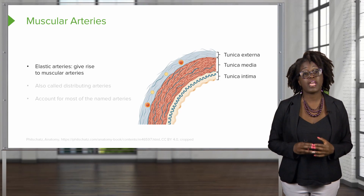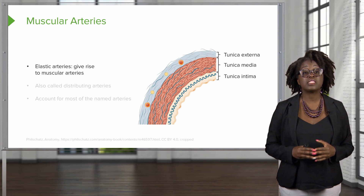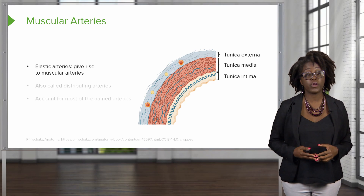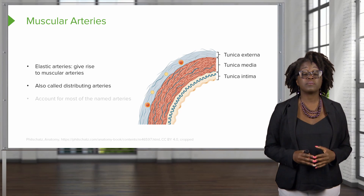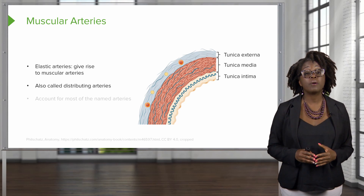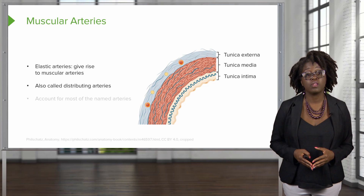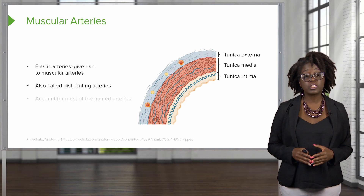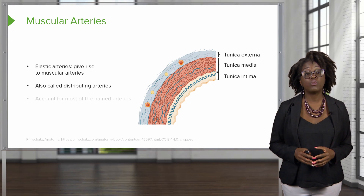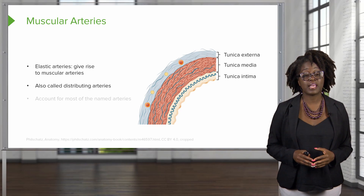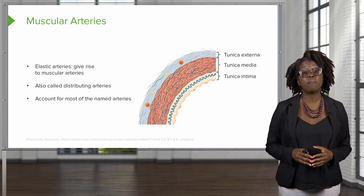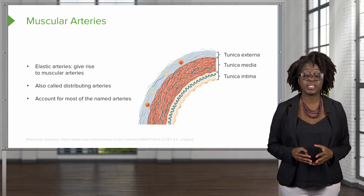Next, we have the muscular arteries. Elastic arteries are going to give rise to this second type of artery. These are sometimes also called distributing arteries because they deliver blood to the body organs. The diameters of our muscular arteries range in size from the size of your pinky finger down to a very small size like the size of pencil lead. They can account for most of the named arteries in our bodies.